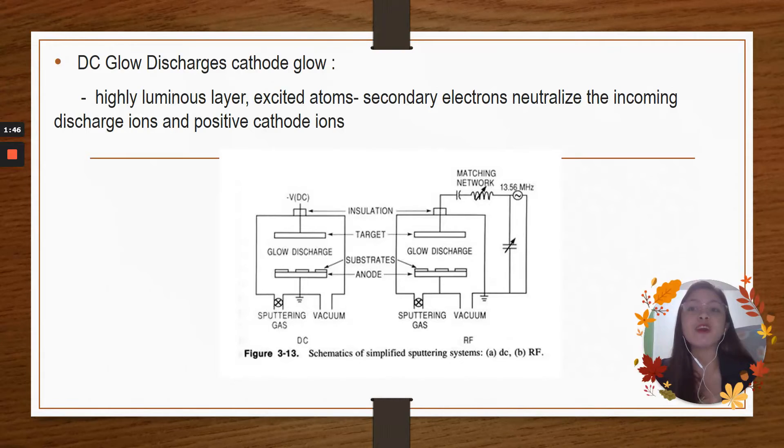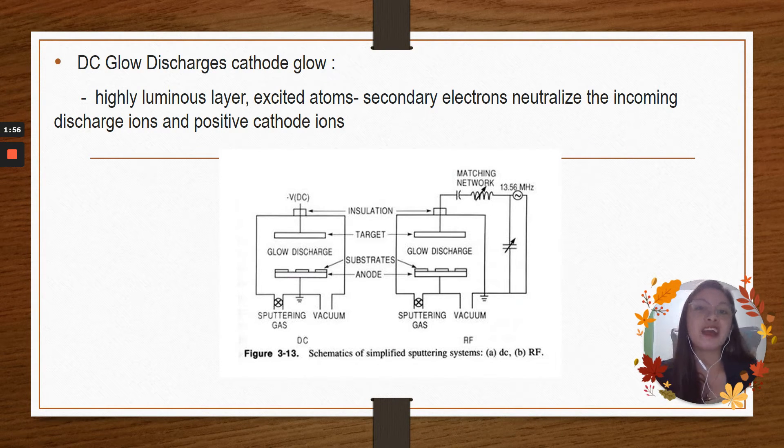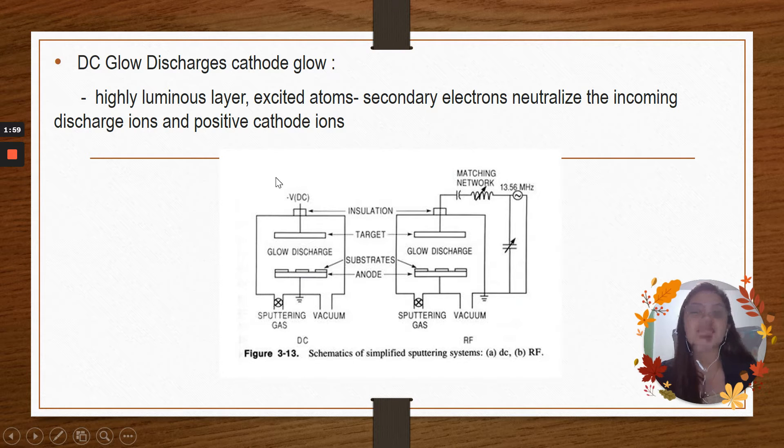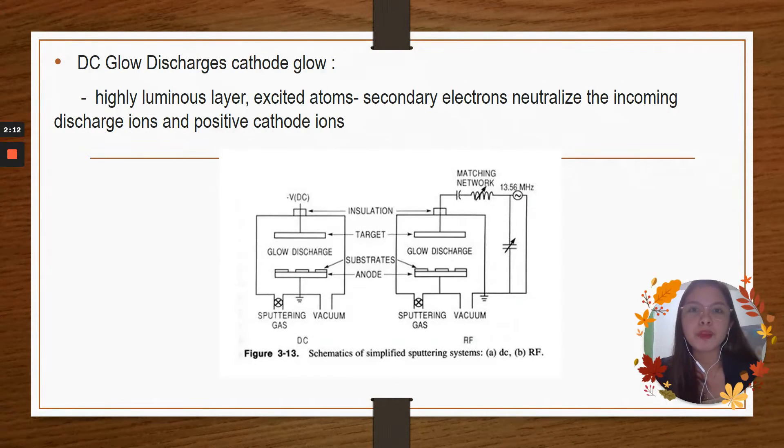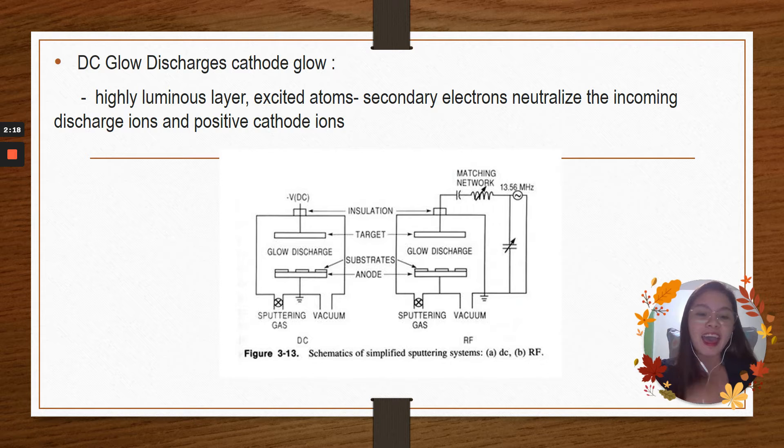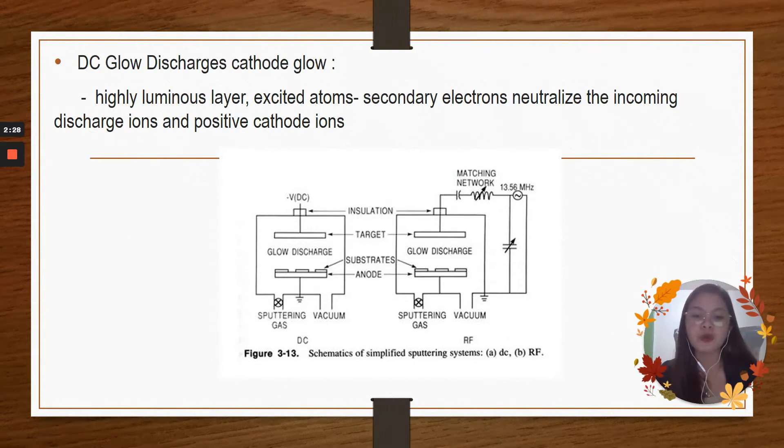For the next part, we have the DC or direct current glow discharge cathode glow. This is the highly luminous layer where you can see the excited atoms, secondary electrons neutralize the incoming discharge ions and positive cathode ions. For this part, I would like to extend the knowledge for what is the cathode and anode. For the cathode, the meaning of cathode is the negatively charged electrode by which the electrons enter an electrical device. For the anode, this is the vice versa of the cathode. Anode is the positively charged electrode by which the electrons leave a device.